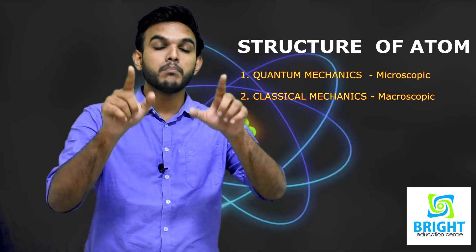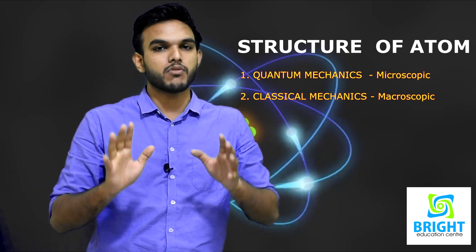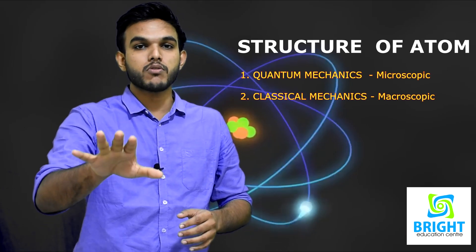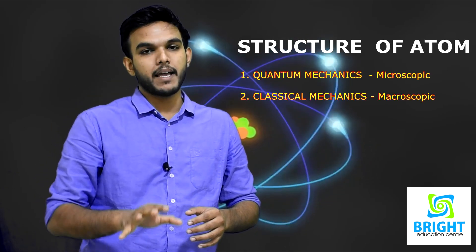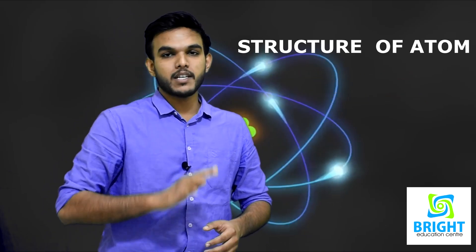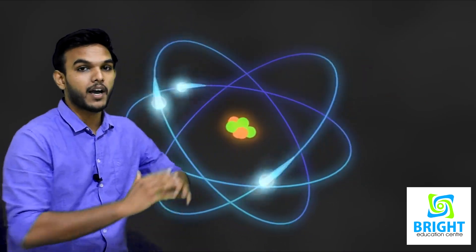We know that quantum mechanics and classical mechanics are important parts of structure of atom. Classical mechanics deals with macroscopic particles, but quantum mechanics deals with microscopic particles. This quantum mechanics was developed by Schrodinger. He put forward his equation known as the Schrodinger equation.